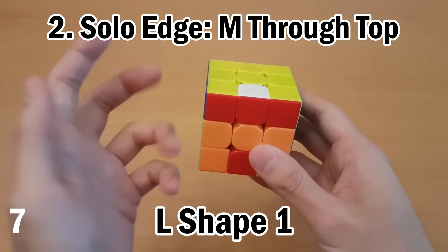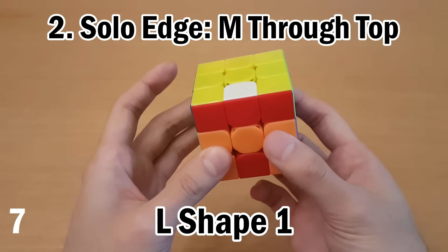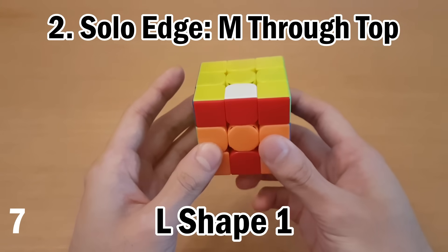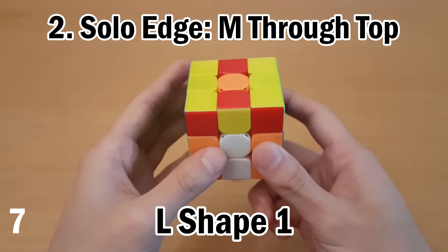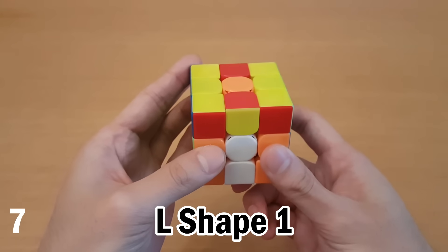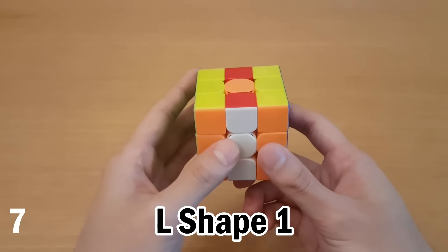Next, this can either be a solo edge, so it's just an edge with the rest all being a different color, or it can be attached to the correct center, such as this one right here. So if it is a solo edge, do an M move that moves it through the top. So here, if we do M, it goes to the bottom. So instead, we will do M' as it stays on top. So M' keeps it in the top, and then we're going to do U2 because all of your U moves during L4E are U2.